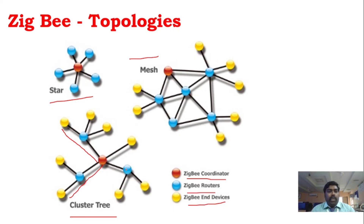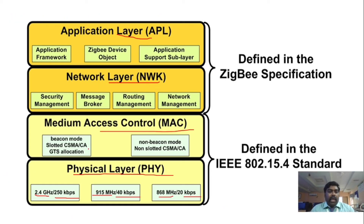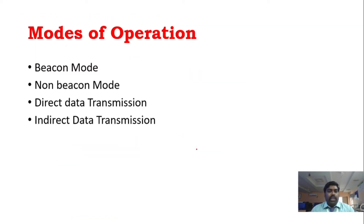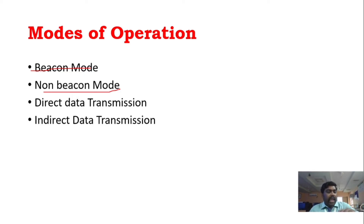Operation modes are very important. In CSMA-CA, there are two operation modes: beacon mode and non-beacon mode. In non-beacon mode, there are direct data transmission and indirect data transmission.